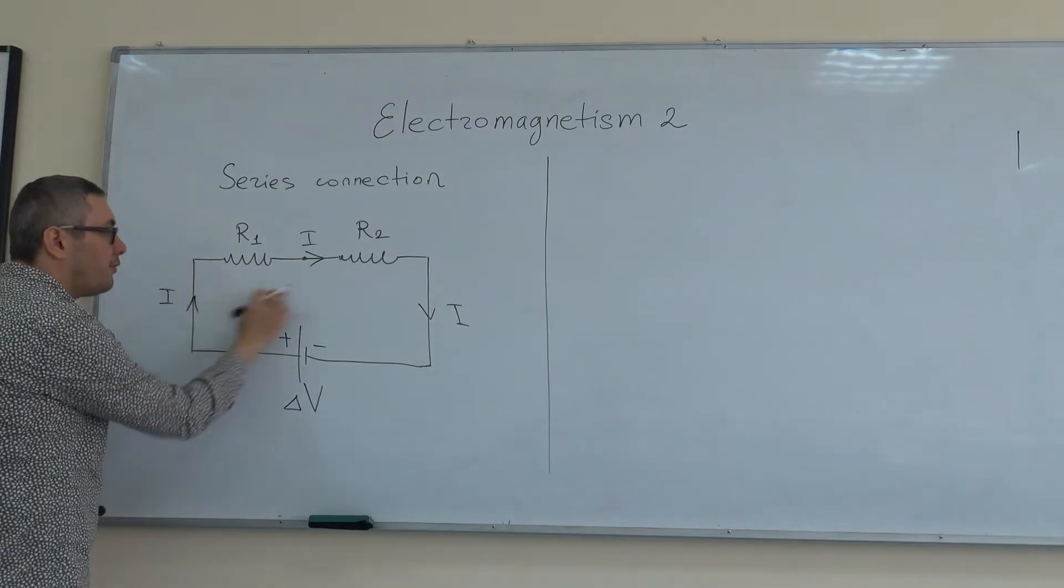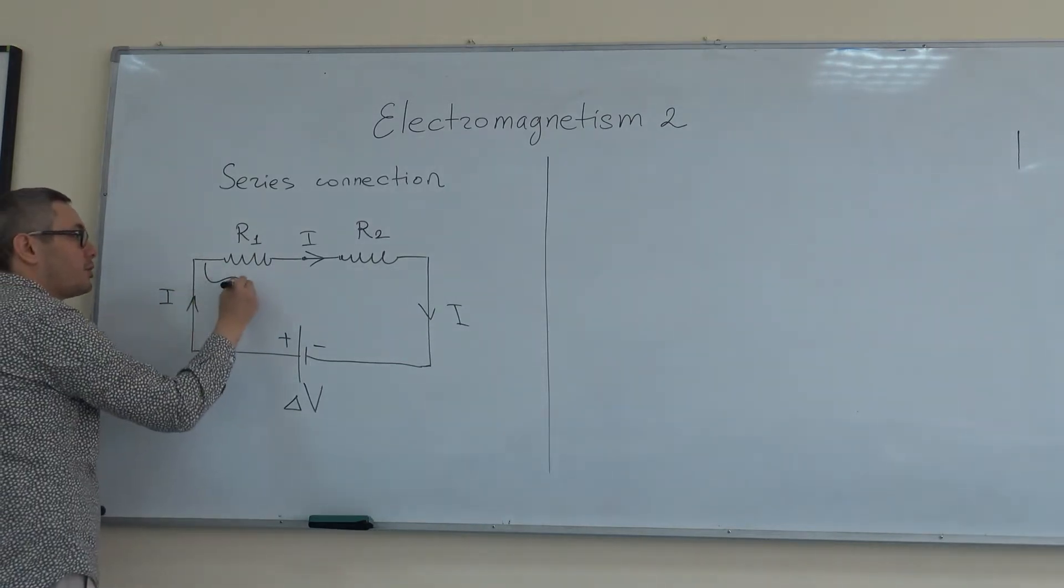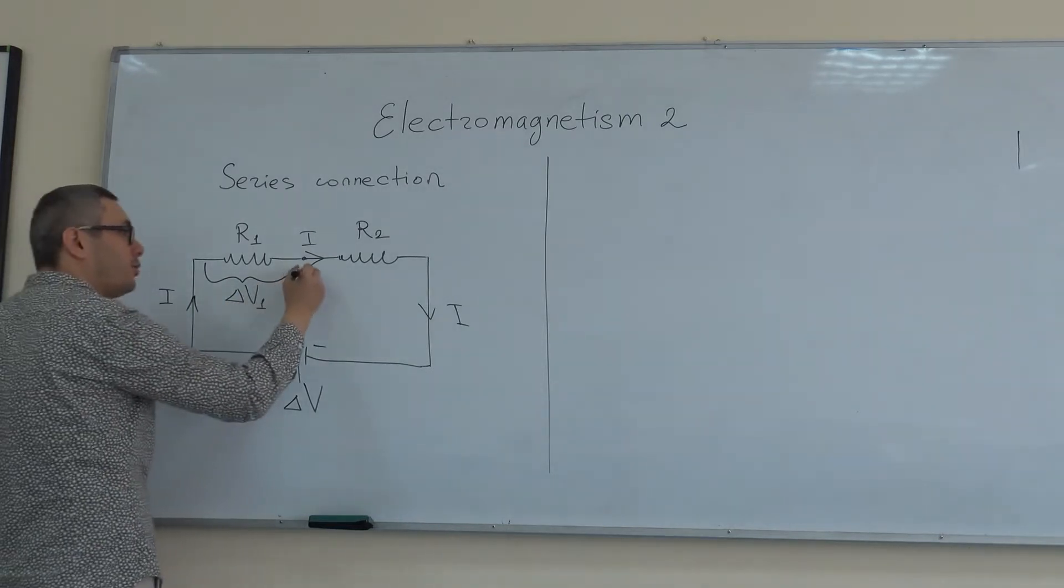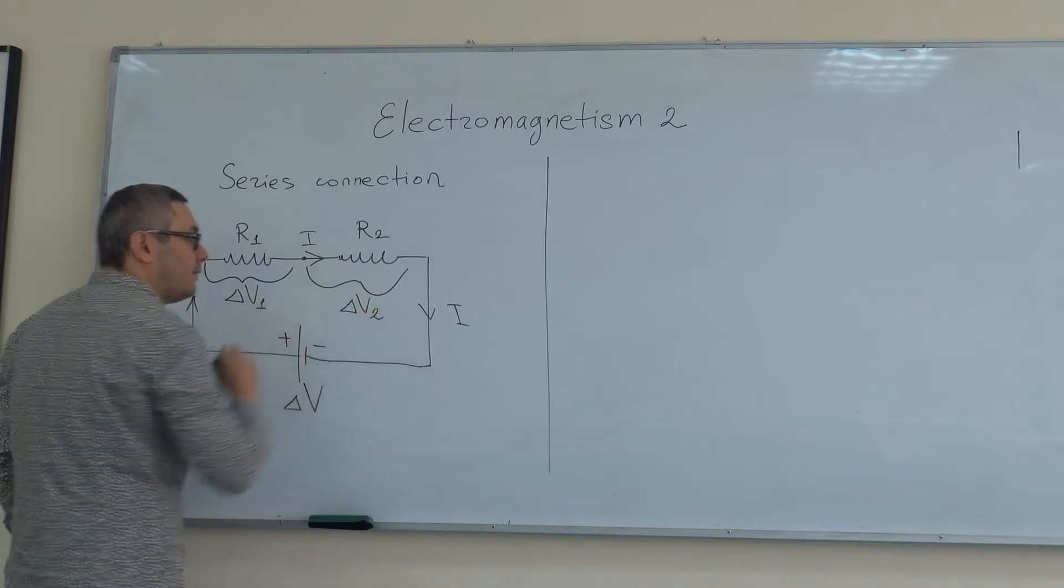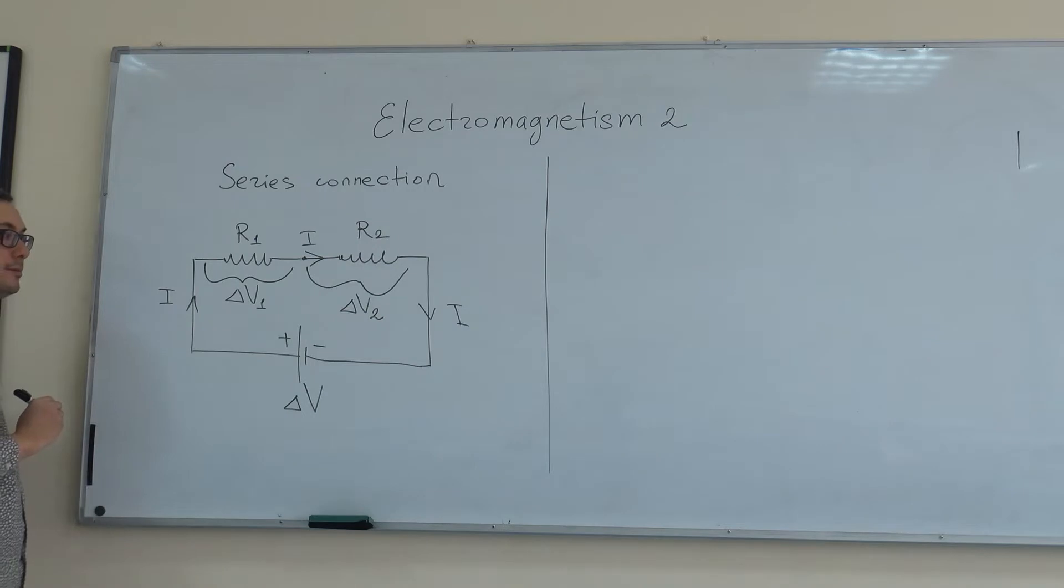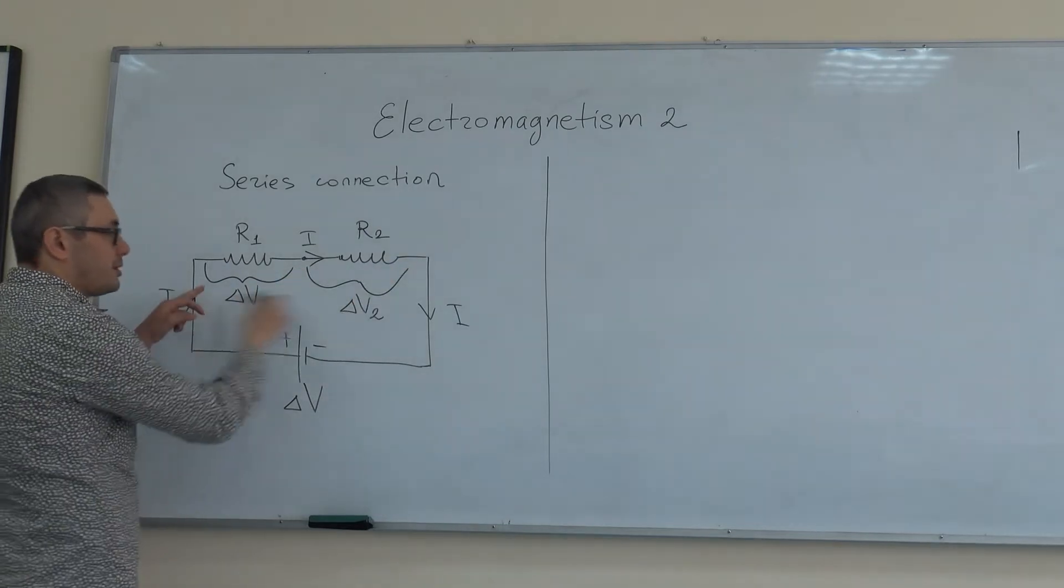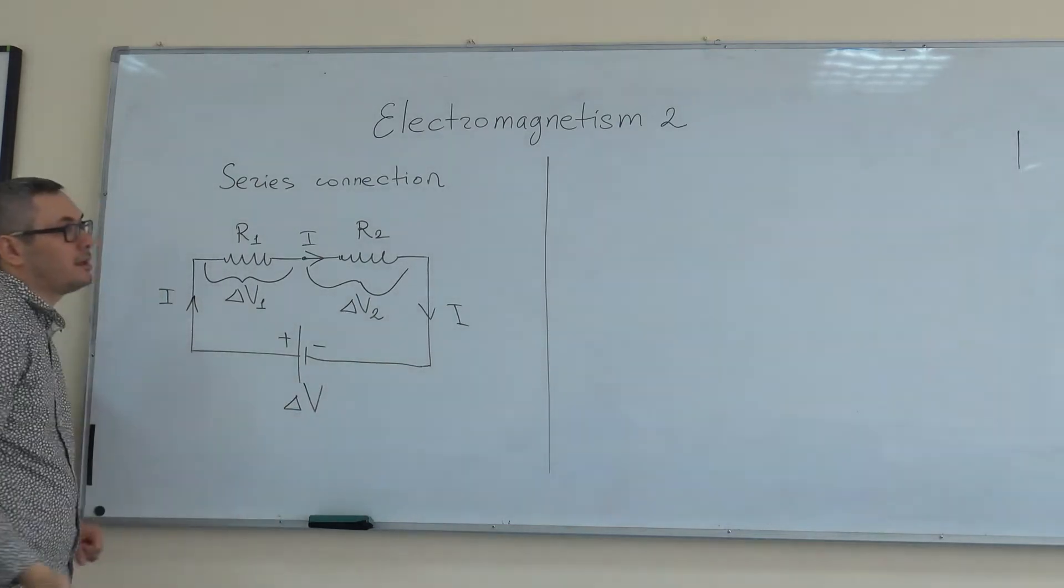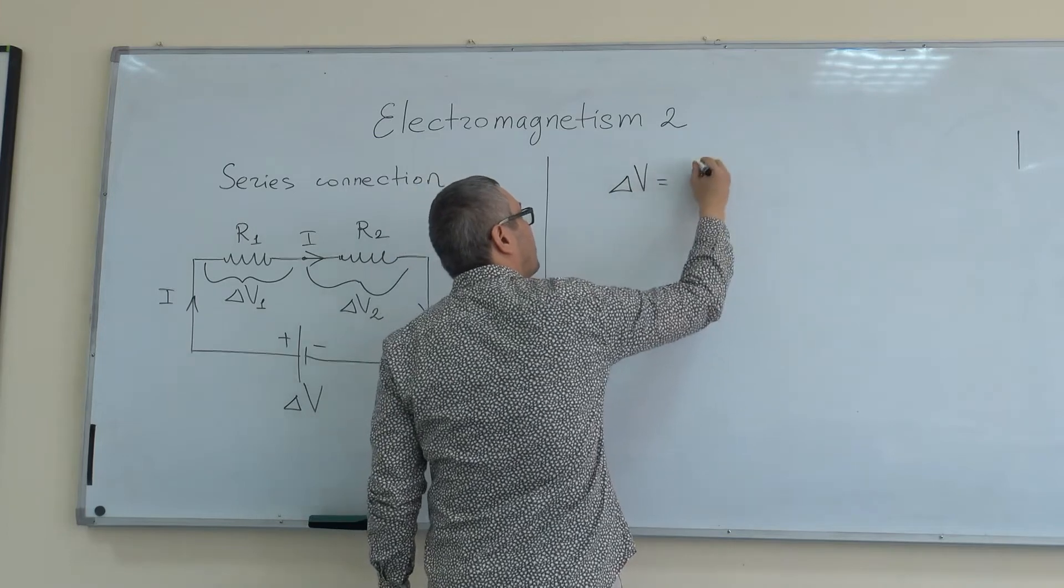There will be a voltage drop when going from here to here, and this voltage drop is Delta V1. There will be a voltage drop when going from here to here, and that we're going to call Delta V2. By looking at this picture, you can see that the sum of the voltage drops across these two resistors is equal to the Delta V of the battery. So we can say that Delta V is equal to Delta V1 plus Delta V2.